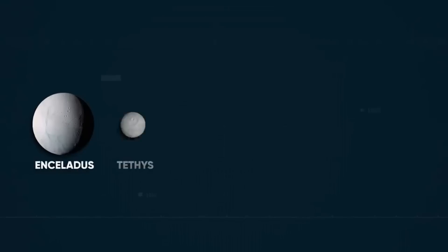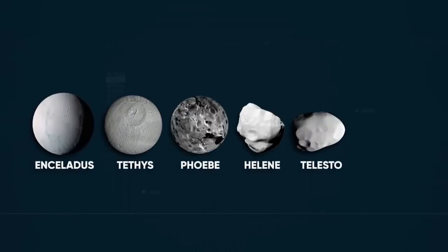Voyager 2 photographed Hyperion, the hamburger moon, Enceladus, Tethys, Phoebe, Helene, Telesto, and Calypso during the encounter.